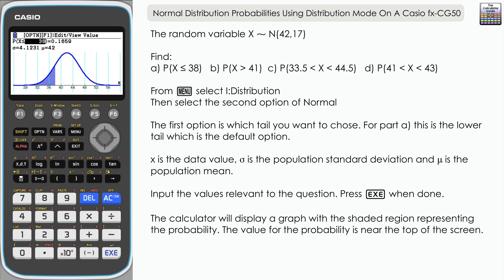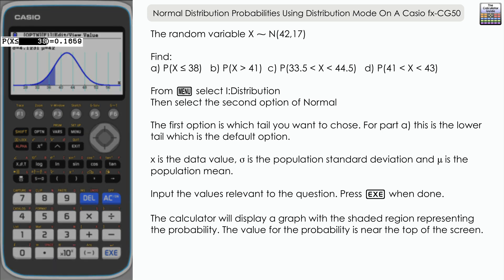The value for the probability is located at the top here. For part A, it's 0.1659.